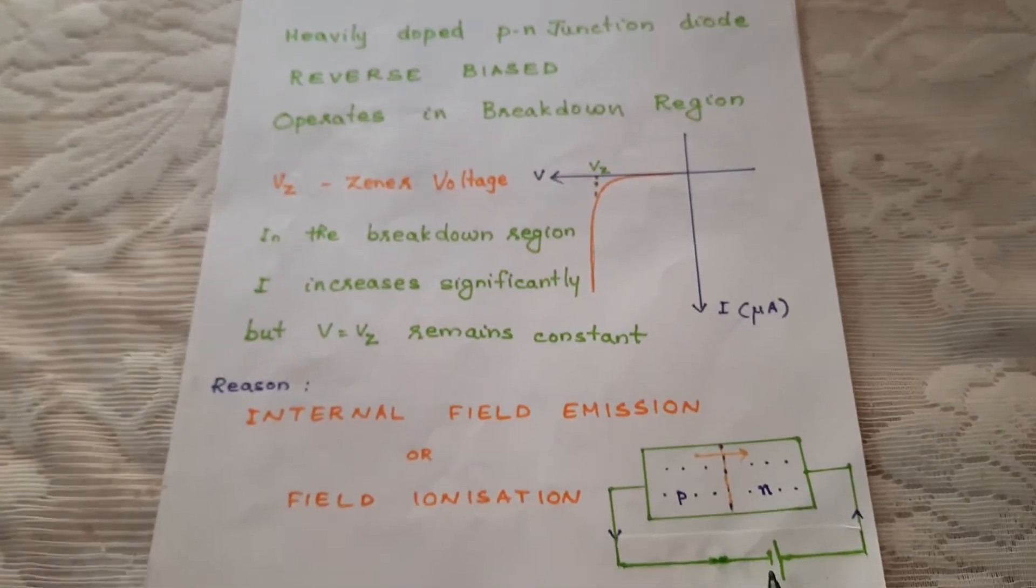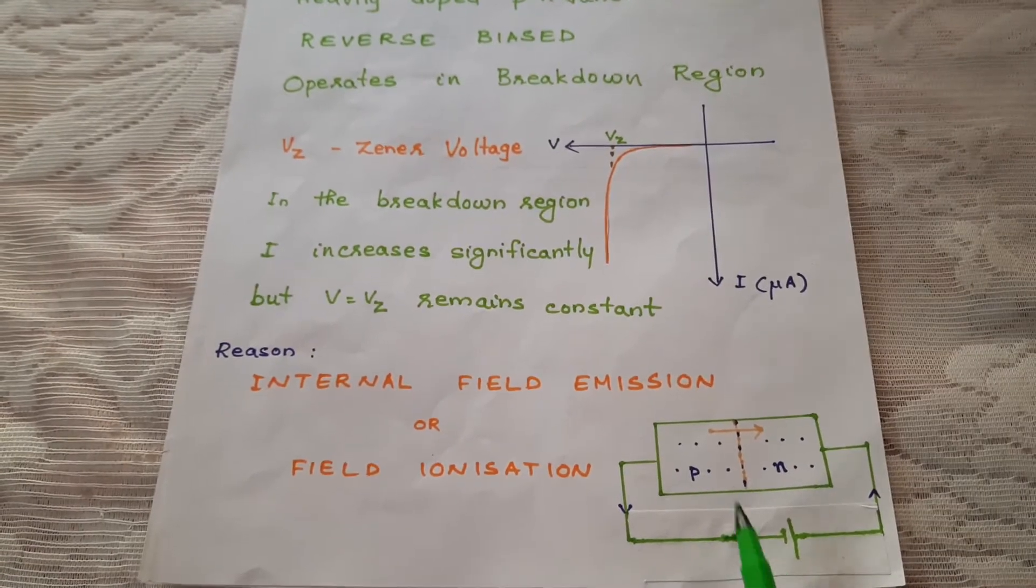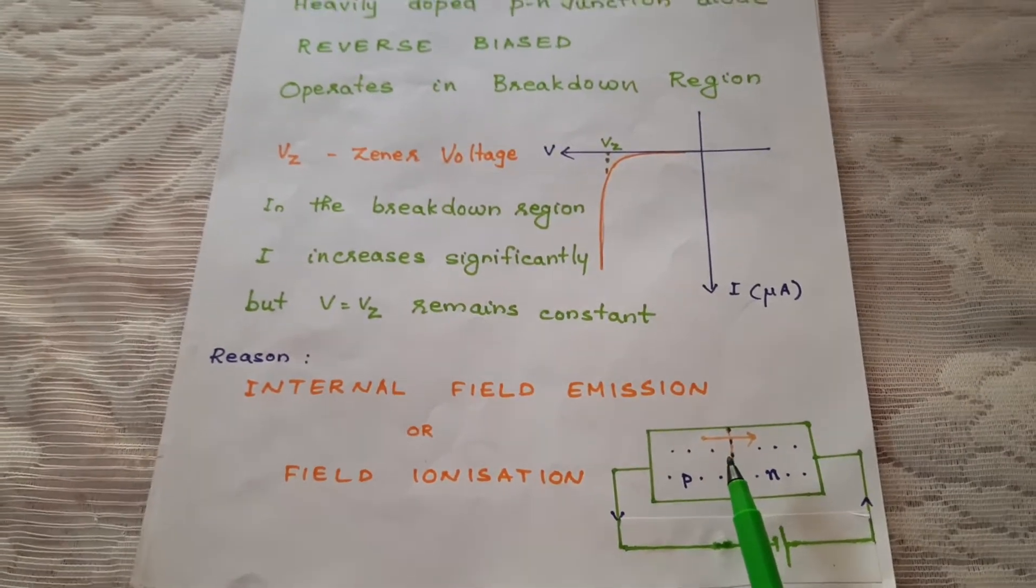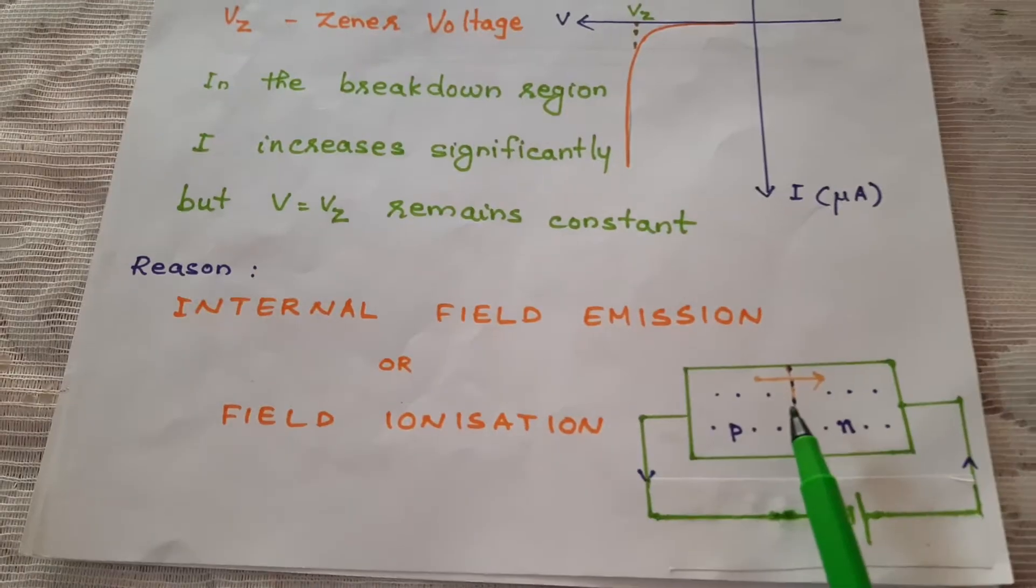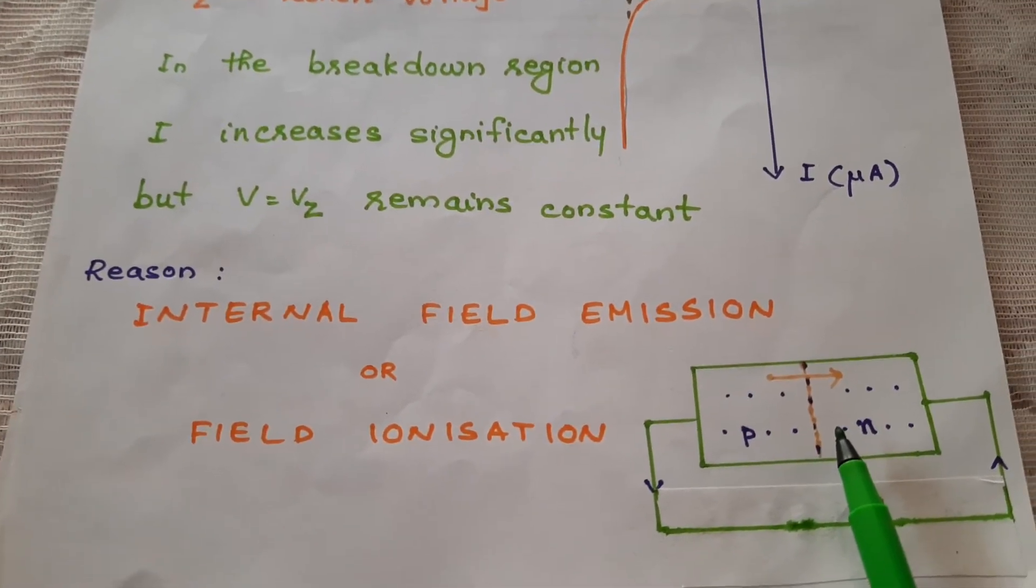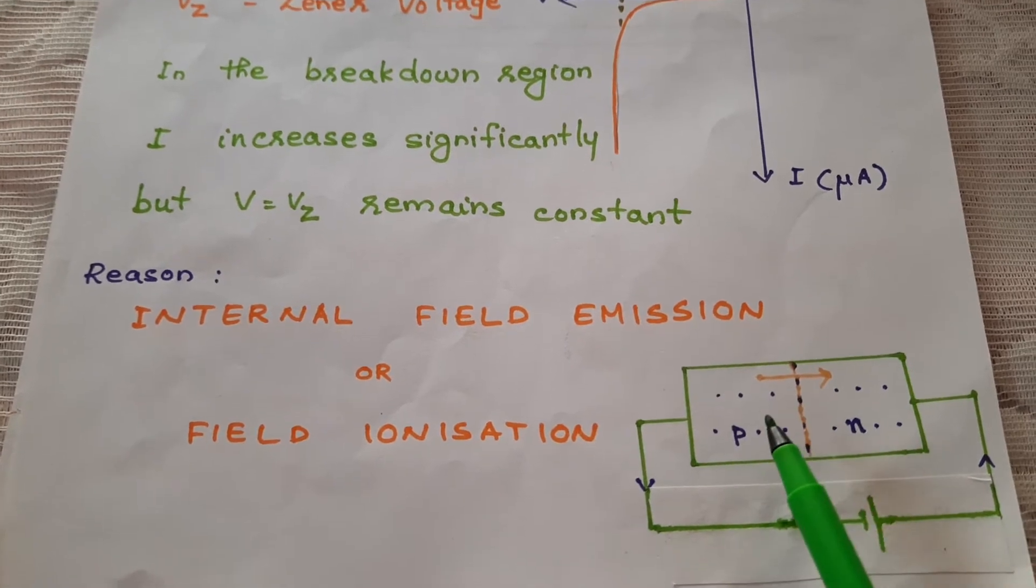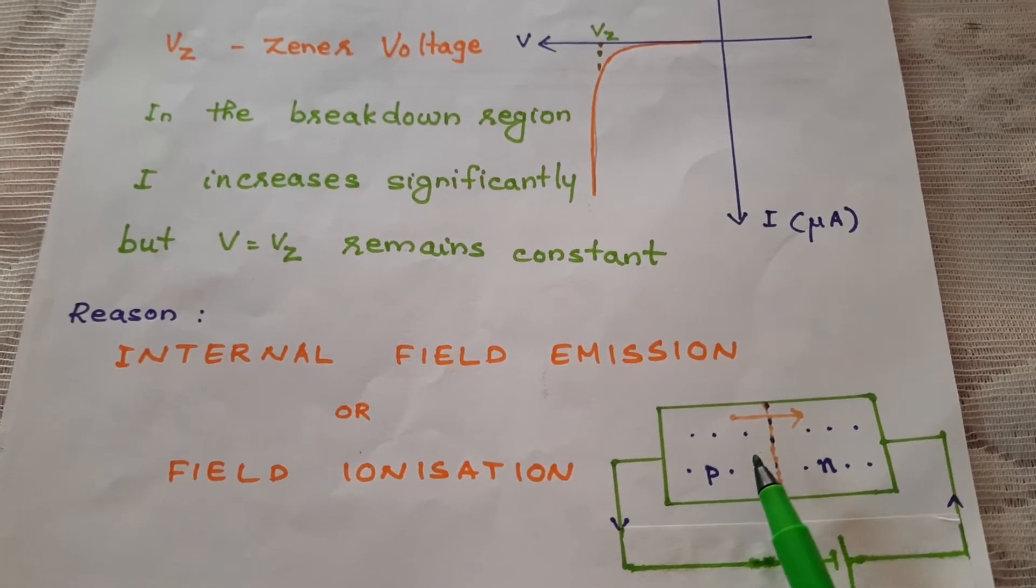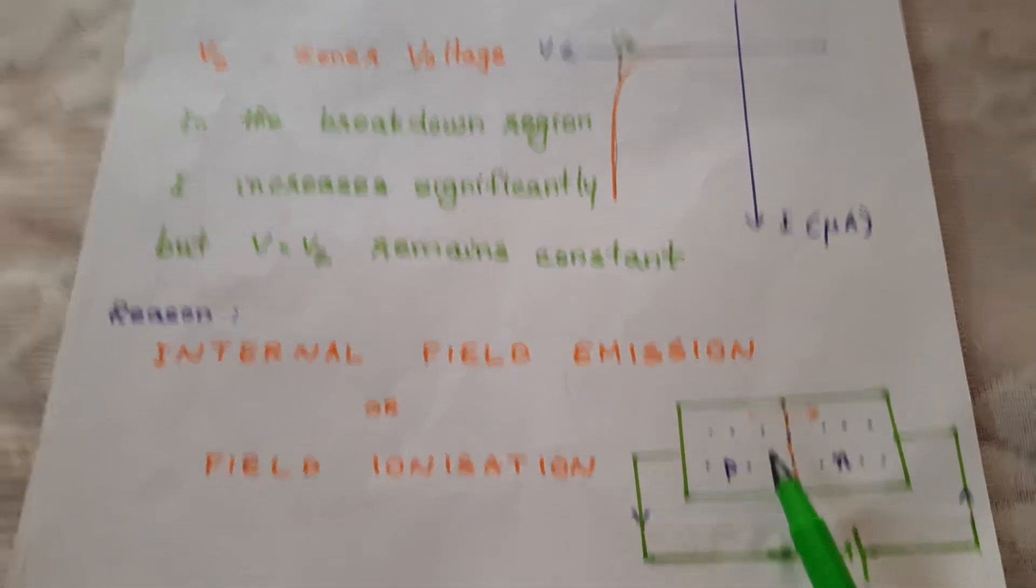And when the reverse bias voltage is applied, the electric field increases and this high electric field ionizes the atoms in the crystal. So, electrons and holes are generated due to ionization.